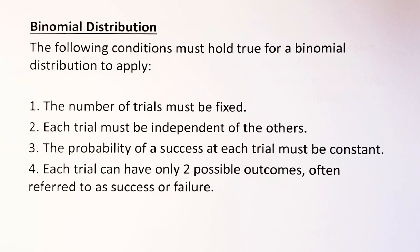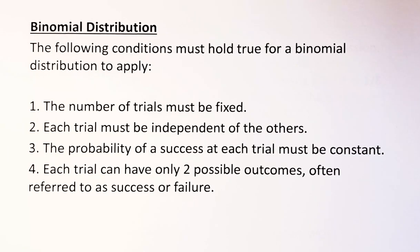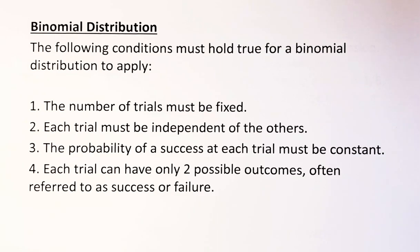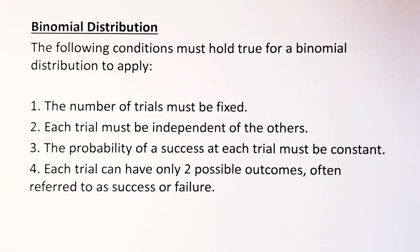So what is a binomial distribution? It can only occur if the following conditions hold true. First, it must have a fixed number of trials. Secondly, the trials must be independent of each other. Third, the probability of success at each trial must be constant. And last but not least, they only have two possible outcomes often referred to as success or failure.